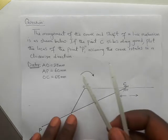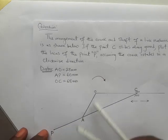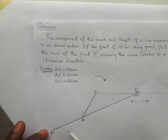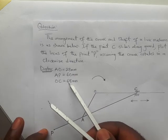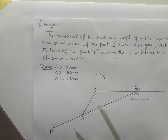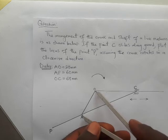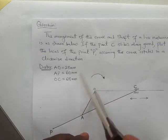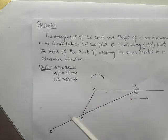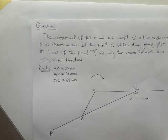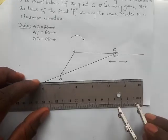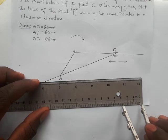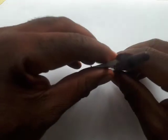We're going to draw a circle. The data has been given: AO the crank is 28 millimeters, AP is 60 millimeters, and OC is 68 millimeters. The first thing you do is take the length AO and inscribe a circle with it. AO is 28, so that's 2.8 on the ruler. Inscribe the circle with it using thin lines.